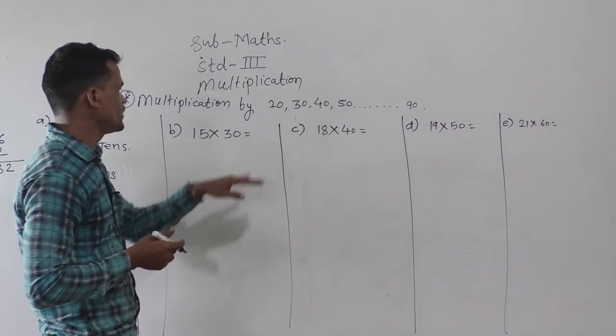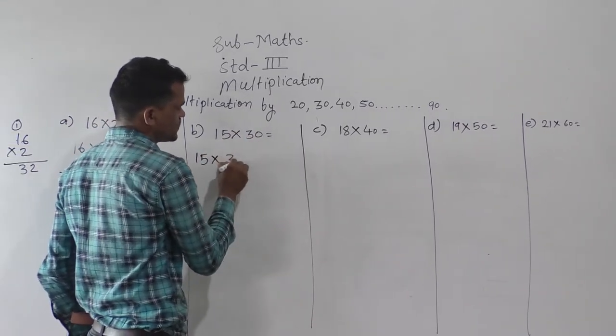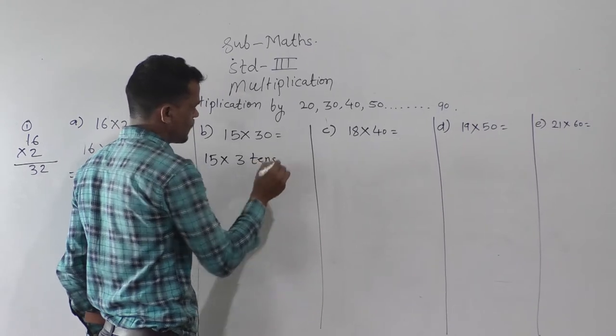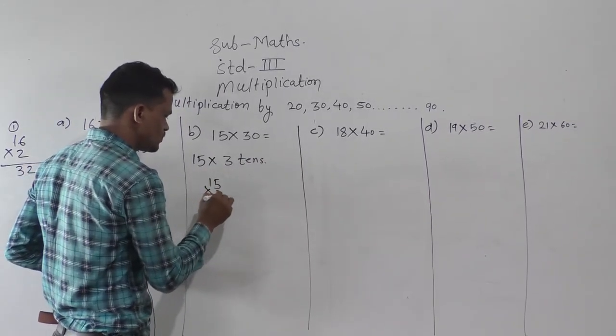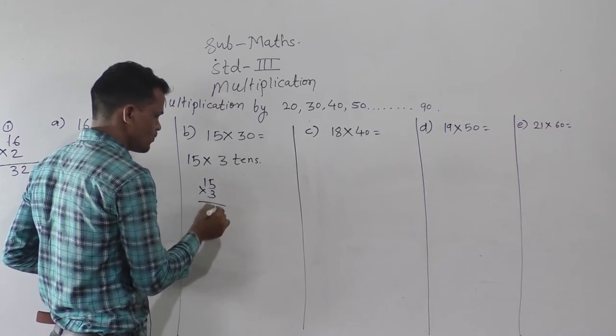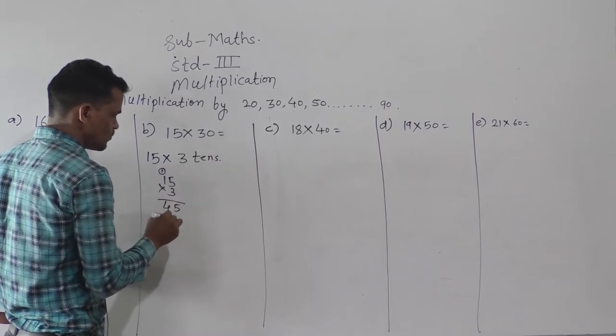Then next example, 15 into 30. So write 15 into 30 means 3 tens. Now do this multiplication, 15 into 3. 3 fives are 15, 1 carry. 3 ones are 3, 3 plus 1, 4.